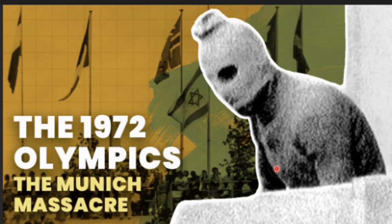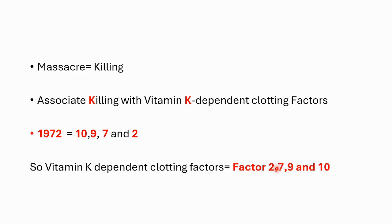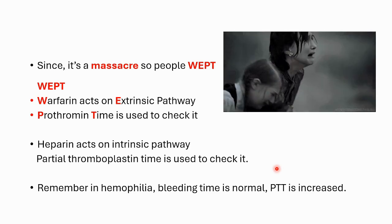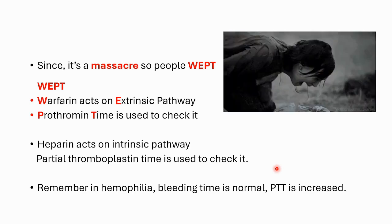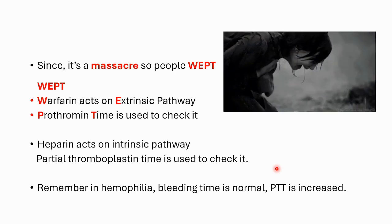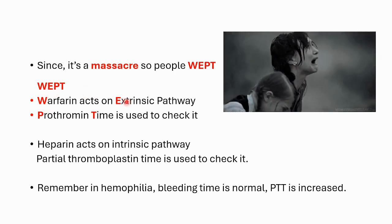Now a bit of history: in 1972, there was a massacre of 11 Israeli athletes at the Munich Olympics, and the whole world wept. We associate 'massacre' with killing — killing relates to the letter K — vitamin K dependent clotting factors. Breaking down 1972 as 10, 9, 7, and 2: the vitamin K dependent clotting factors are factors 2, 7, 9, and 10.